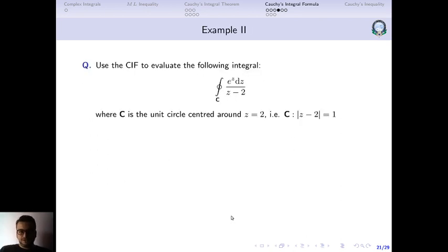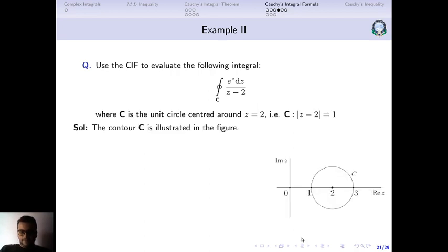This is very useful because it helps us evaluate these kinds of integrals very easily. Suppose I want to evaluate the integral of e^z/(z minus 2) over a unit circle centered at z equals 2 with radius 1. When I say c is a unit circle centered around z equals 2, mathematically that means |z minus 2| equals 1 — 2 is the center and 1 is the radius. So this contour is a circle of radius 1 centered at z equals 2.